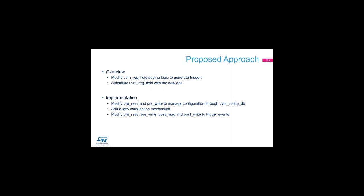Our approach tries to add the capability to fire events on every single field inside the UVM Register Model. To do that, we modify the original UVM register field class, adding all the logic to correctly manage trigger generation and the possibility to configure it. Once we define this new version of the UVM register field, we substitute the original version with the new one.